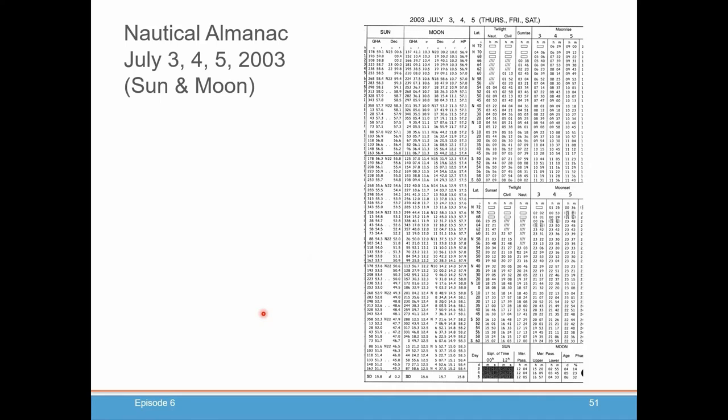So this is what the Nautical Almanac looks like. Each page, or double-sided page, the other side is for the planets and stars, but the right-hand side of the page, they both cover three days. So in this particular example, this is from 2003, covering the days of July 3rd, 4th, and 5th, which were Thursday, Friday, and Saturday that year. And you'll see a table of GHA and declinations for the sun, the moon, a couple of other pieces of information we'll get to when we do the moon. Twilight information, sunrise and moonrise information, and sunset and moonset information, and other information about the sun, the moon, which we'll use in later episodes. But this is basically what they call the daily pages in the Almanac.